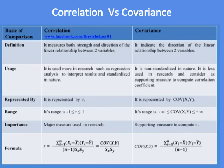Correlation is used more in research, such as regression analysis, to interpret results and is standardized in nature, while covariance is non-standardized in nature. Covariance is less used in research and is considered a supporting measure to compute the correlation coefficient.